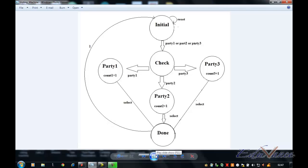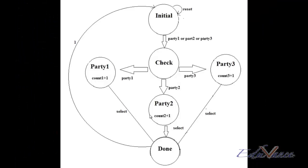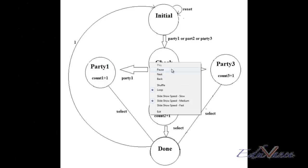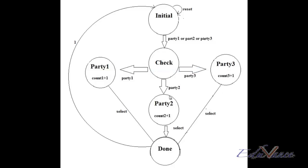This is the state machine that we are going to implement as part of the voting machine. Our voting machine has six states: initial, check, party 1, party 2, party 3, and done. We will need all six states in our finite state machine design.